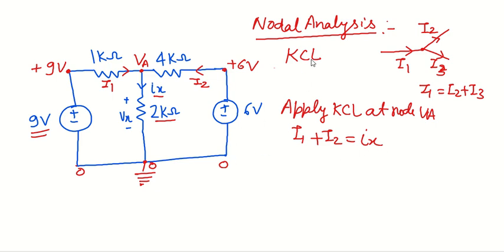The main purpose of node analysis is to represent this current in terms of voltages and resistances. So we can see that I1 is coming from 9 volt supply and it is going towards the VA terminal. So the potential difference across this 1 kilo ohm resistance is 9 minus VA. When we divide this resistance value, it will be giving you the value of total current, that is I1.